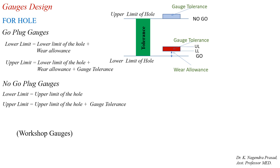The lower limit of the go plug gauge is equal to the lower limit of the hole plus wear allowance. The upper limit of the go plug gauge is equal to the lower limit of the hole plus wear allowance plus gauge tolerance. For the no-go plug gauges, the lower limit of the no-go gauge is equal to the upper limit of the hole, and the upper limit of the no-go gauge is equal to the upper limit of the hole plus gauge tolerance. For the no-go gauges, no wear allowance is provided.